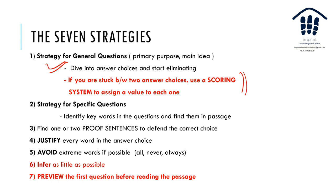For specific questions, identify keywords in the question and find them in the passage — like doing a mental Ctrl+F. Find one or two proof sentences to defend the correct answer choice. Justify every word in the answer choice. Avoid extreme words like 'all' and 'always.' Most importantly, infer as little as possible unless you are explicitly told to infer. Inference is a judgment based on a fact in the passage — that fact must be there; don't infer without basis.